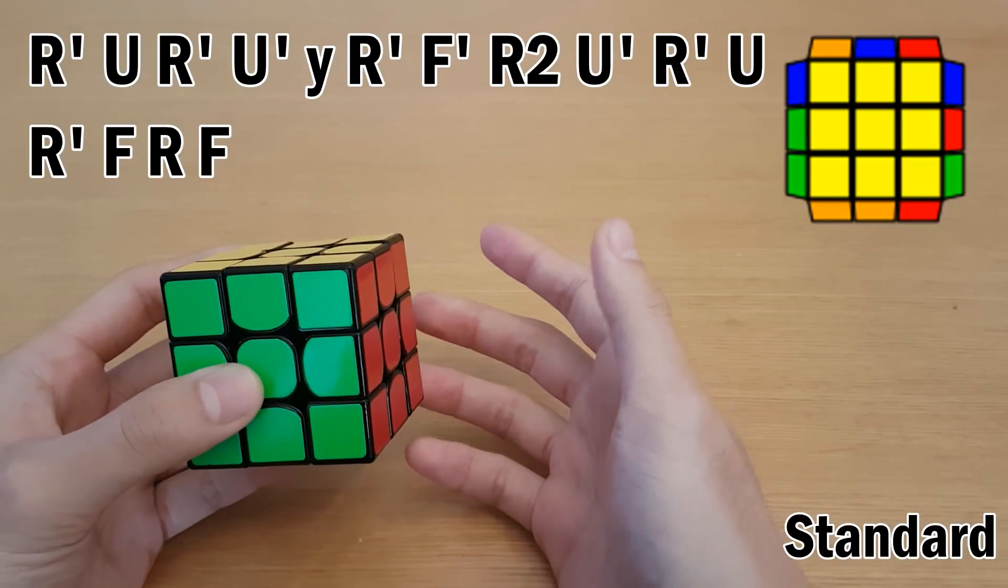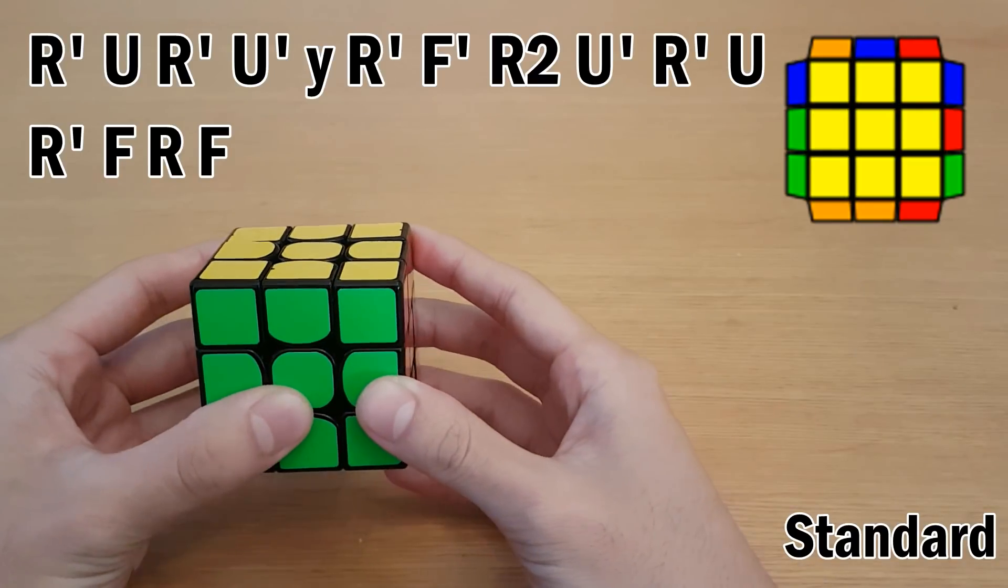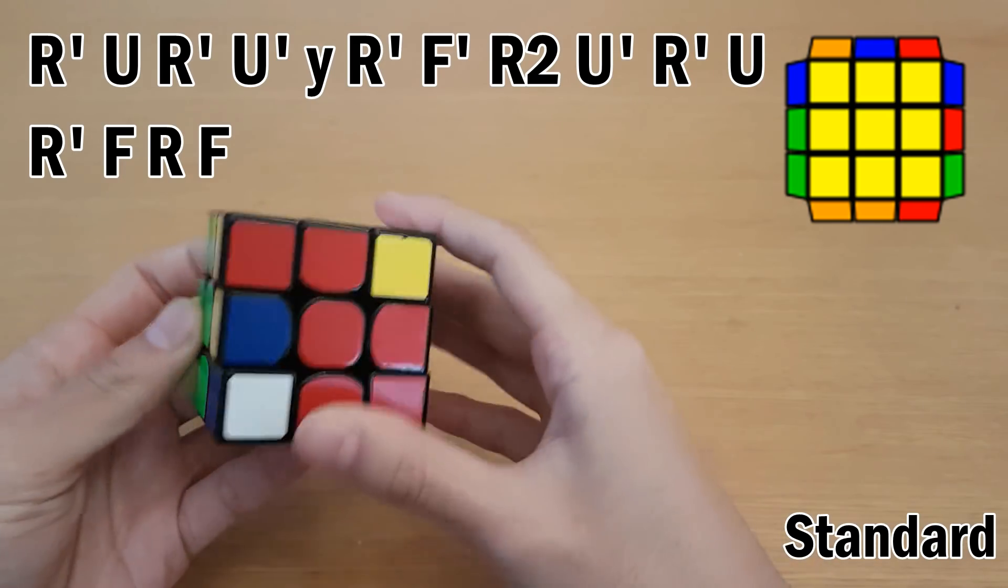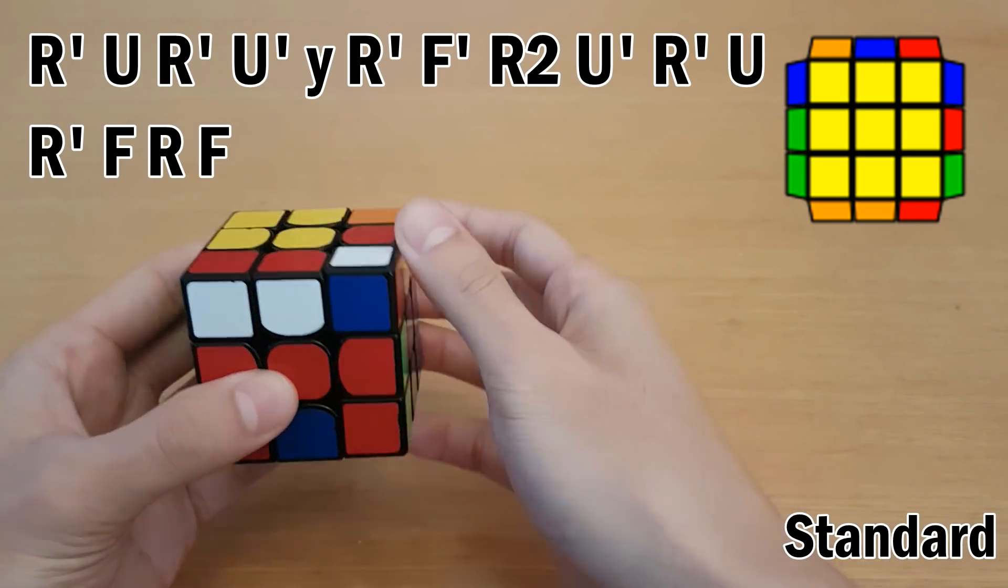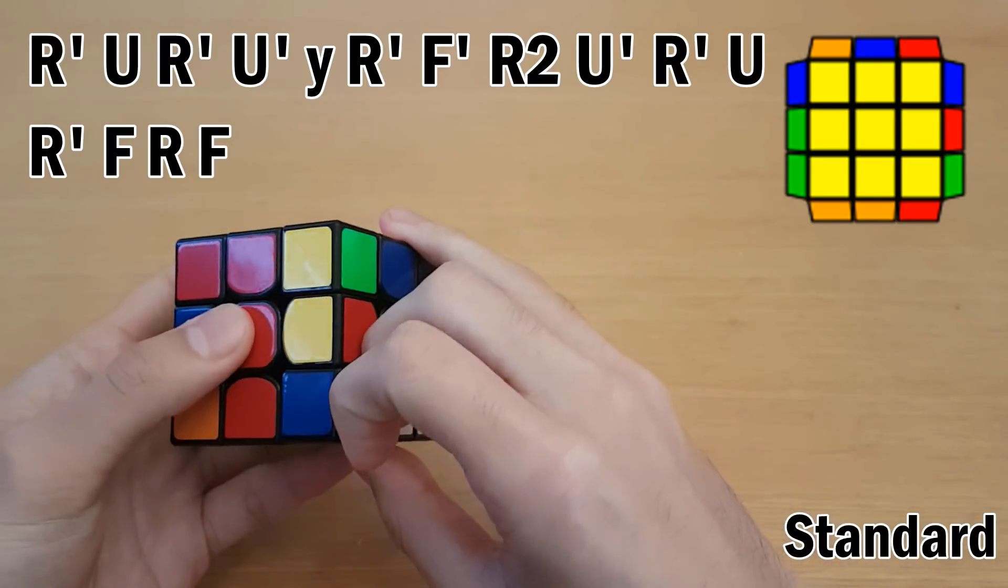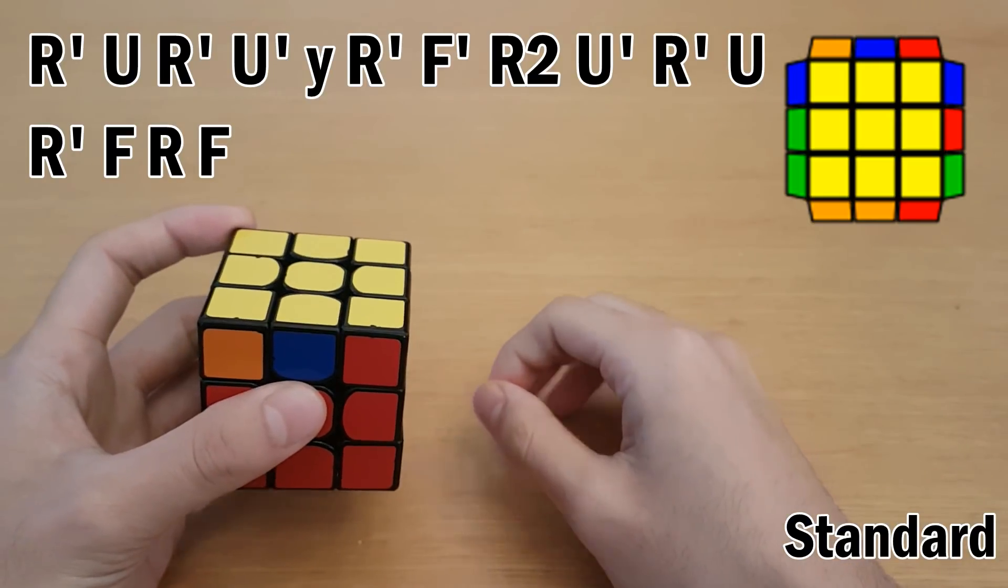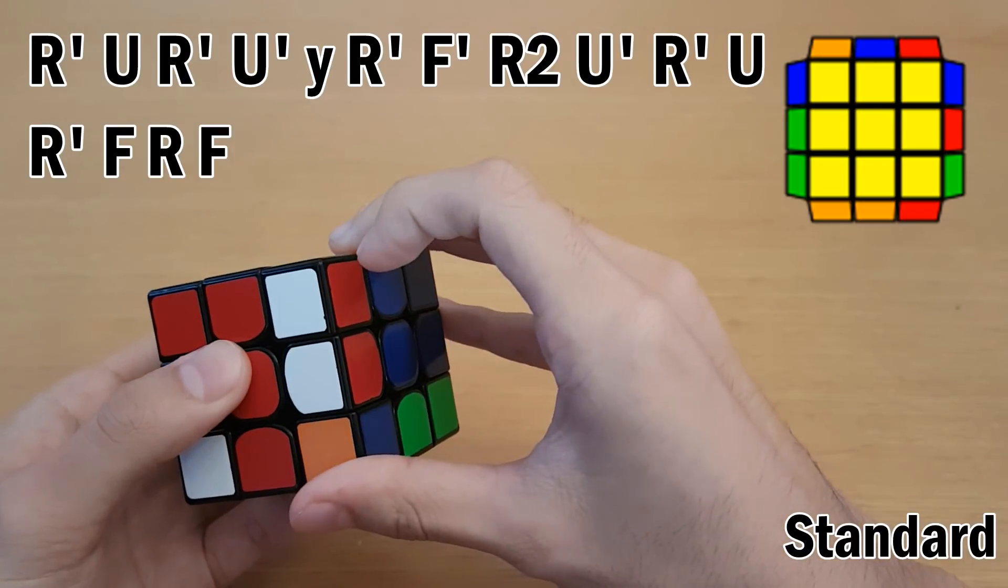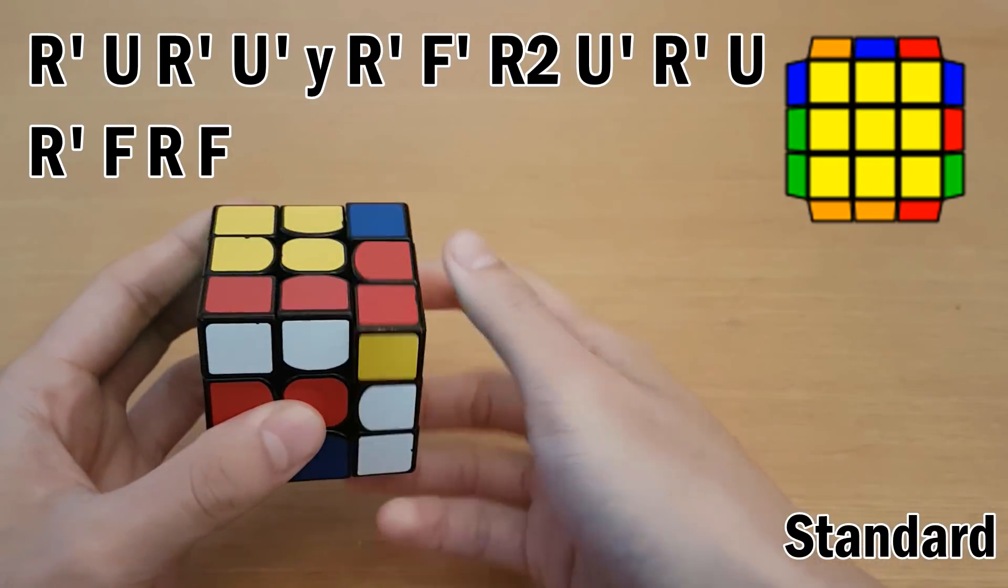So in case this is your first time learning the V-perm, let me show you what the algorithm looks like. So it looks like this, then a rotation. So back from the beginning, we're going to do this, and then do the first F' move with our thumb. R2.